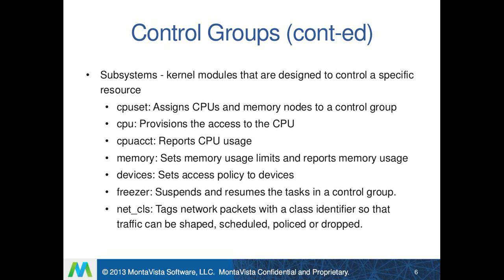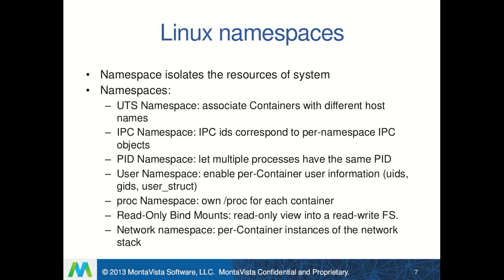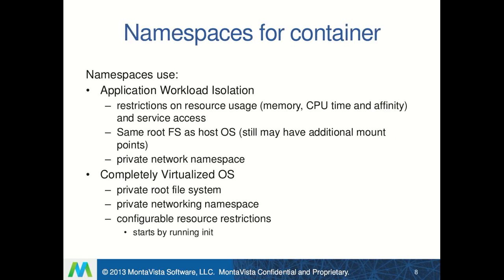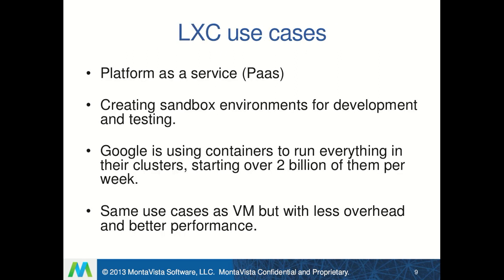Namespaces isolate resources from each other so that a separate container looks like a separate machine. The available resource namespaces include the UTS namespace, IPC, PID, proc namespace, and network namespace. With the help of namespaces we can have application isolation and private network namespaces between containers.